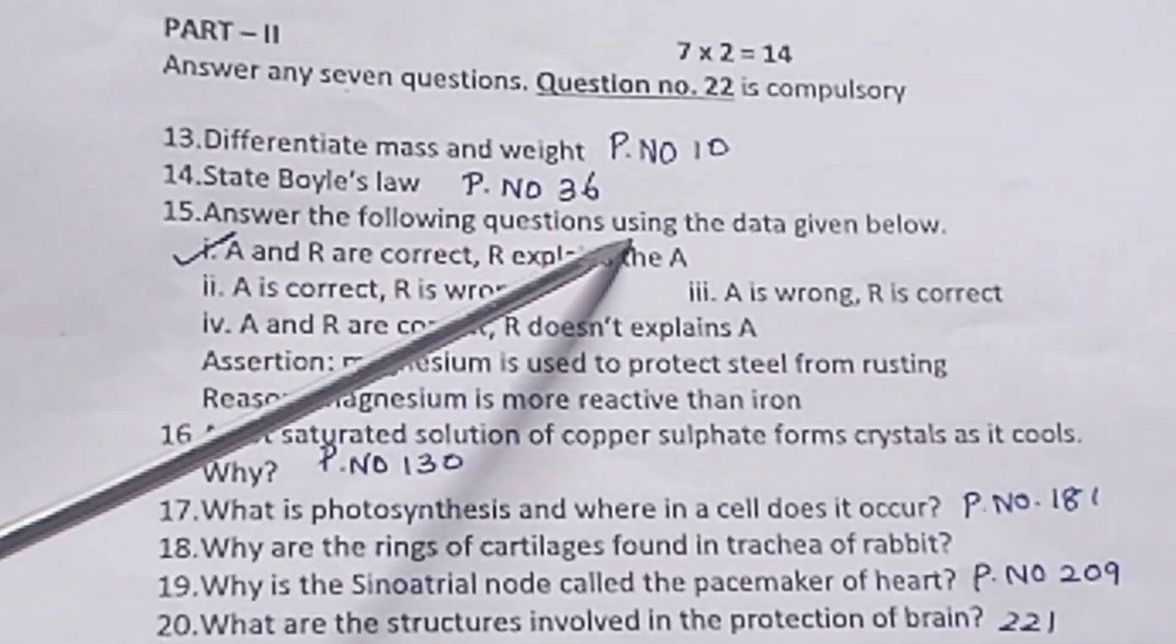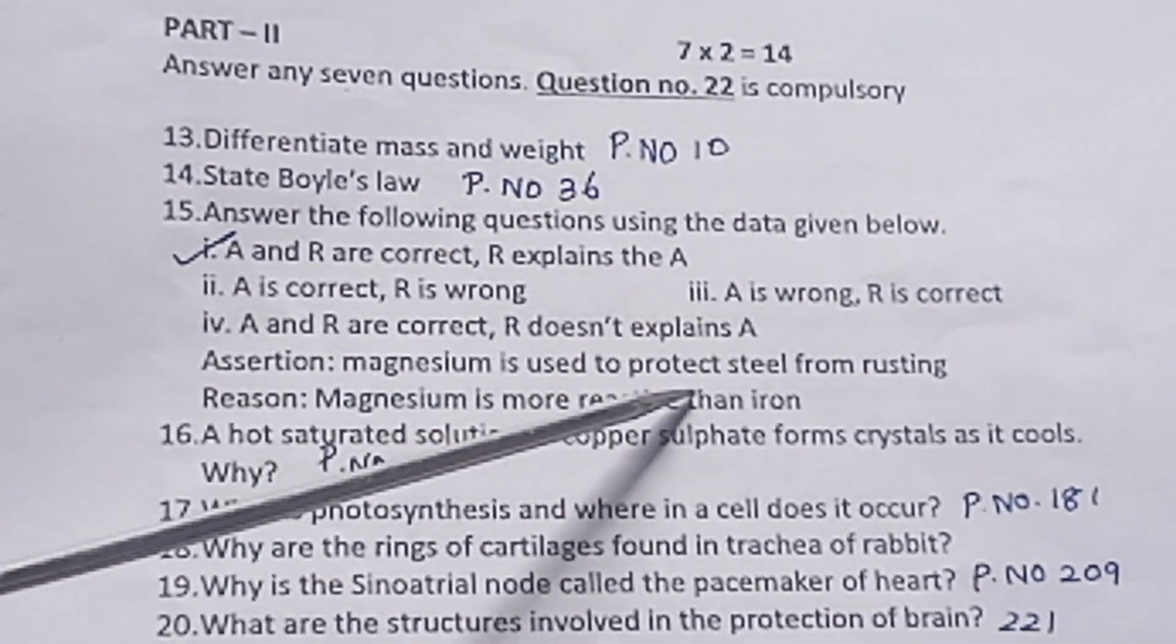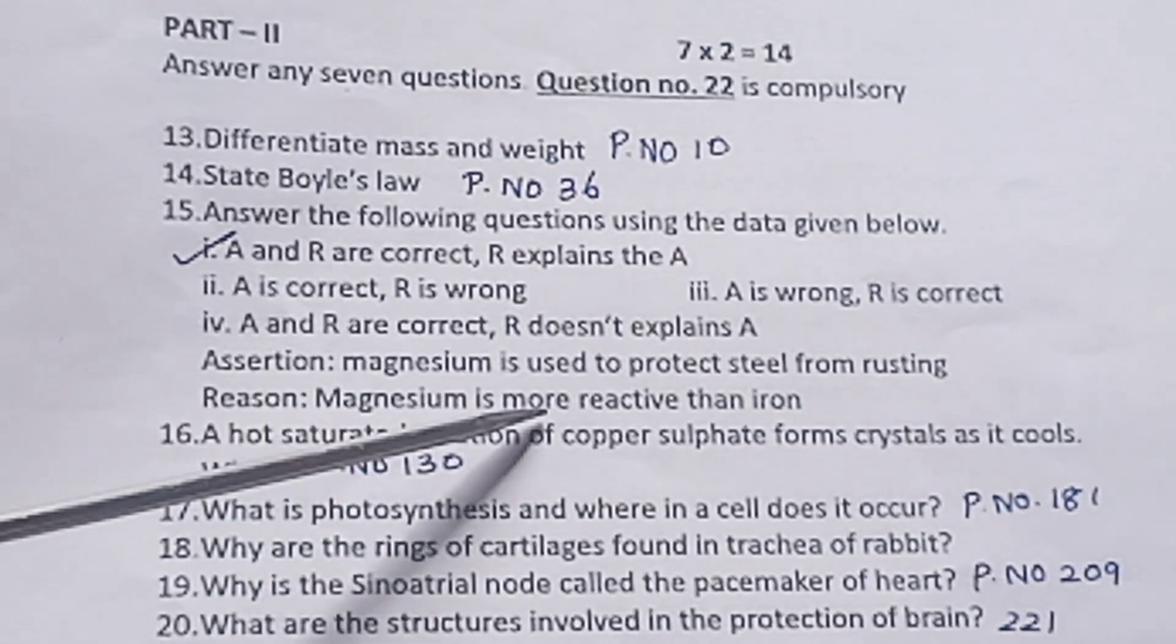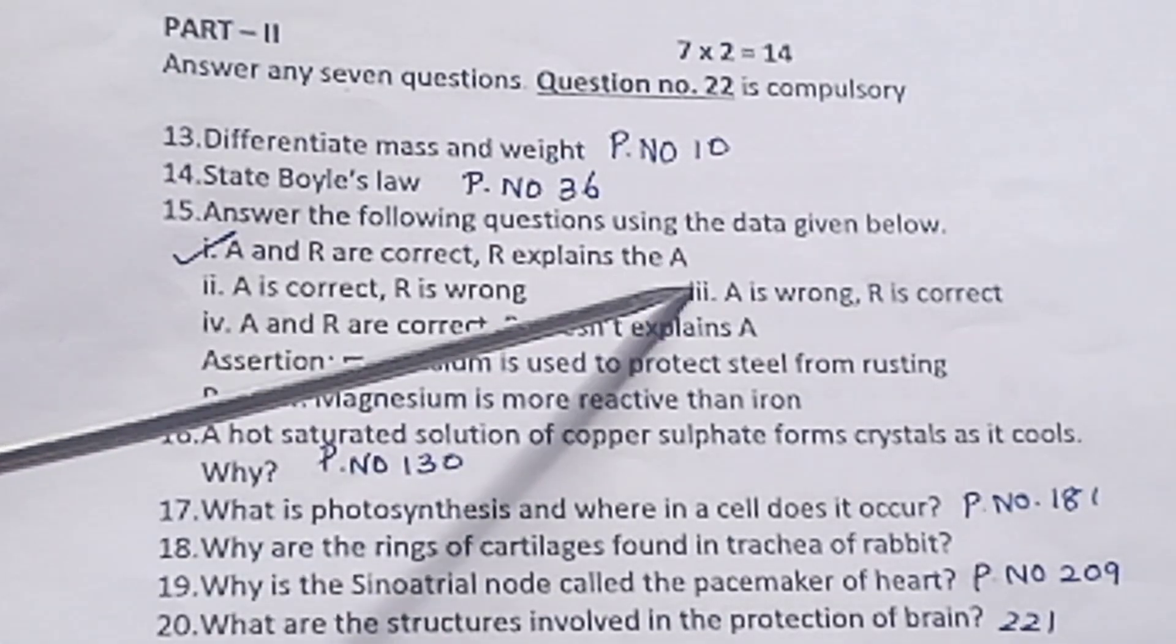Question 15: Answer the following using the data given. Assertion: Magnesium is used to protect steel from rusting. Reason: Magnesium is more reactive than iron. Answer: A and R are correct, R explains A.